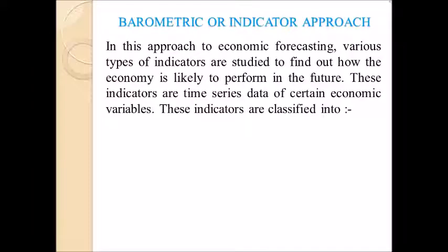Next is the barometric or indicator approach. In this approach to economic forecasting, various types of indicators are studied to find out how the economy is likely to perform in the future. These indicators are time-series data of certain economic variables. These indicators are classified into three types: leading indicators, coincidental indicators, and lagging indicators.